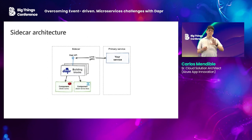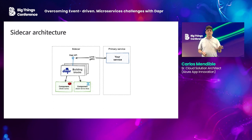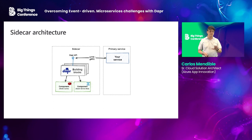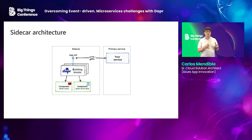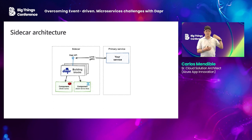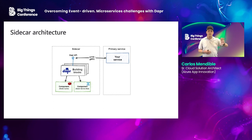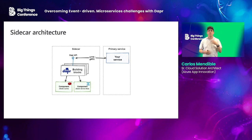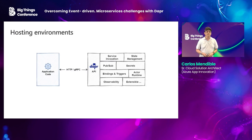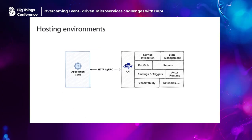Before going into detail on each component, let me tell you how Dapr works. Dapr always works with a sidecar architecture — it runs in another process, isolated from your solution. That means you can use any runtime for your application, whether .NET, Java, or whatever, while Dapr runs as a separate Go process.